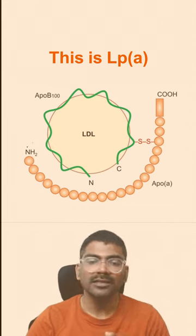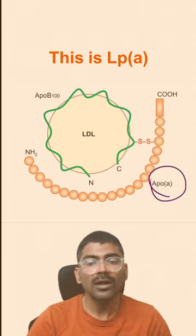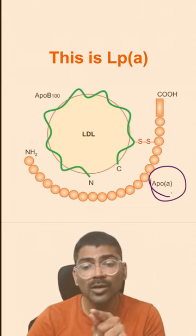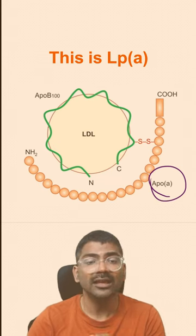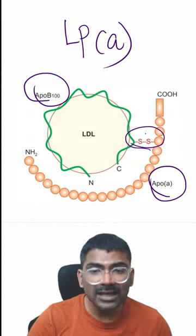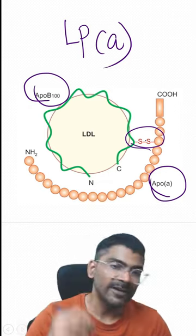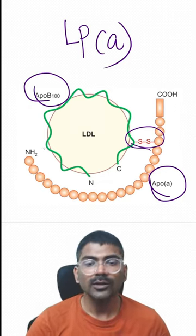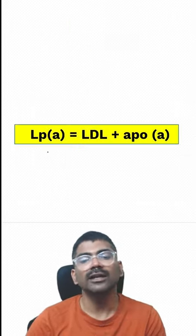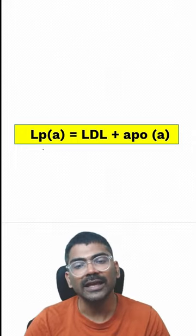Lipoprotein(a) is nothing but one molecule of another apoprotein — apo(a) — in addition to apo B100. This apoprotein is linked to apo B100 via a disulfide bridge. So in summary, lipoprotein(a) is equal to LDL plus apo(a).